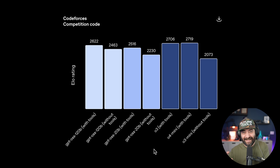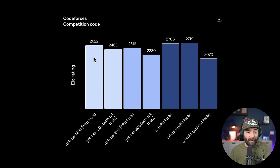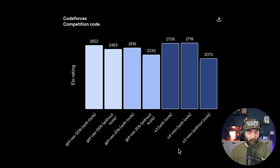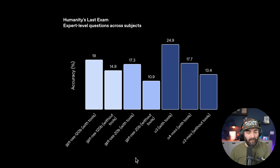Looking at O3 and O4-mini — the current state-of-the-art, pretty much the best models ChatGPT has right now — it's pretty on par. It just performed slightly worse than those, but it actually outperforms O3-mini by quite a bit. In the Humanities Last Exam benchmark, these open weight models perform about on par with O4-mini.